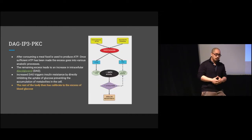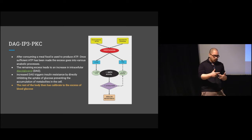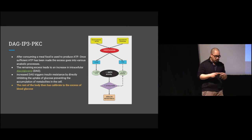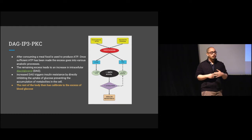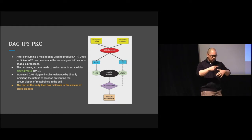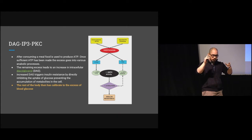Basically, whenever you eat something — carbs, fat, protein, doesn't really make a difference — you make ATP eventually. What ends up happening is you turn that into some sort of fuel metabolite. The excess energy siphons back into the glycolytic pathway or the protein recycling pathway, and as you have enough fuel, excess energy builds up in the cell. That buildup needs to be handled somehow, otherwise it'll cause problems.